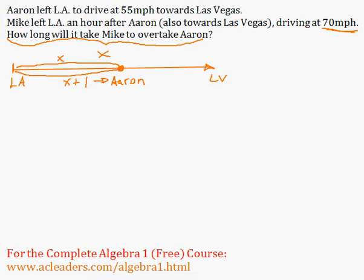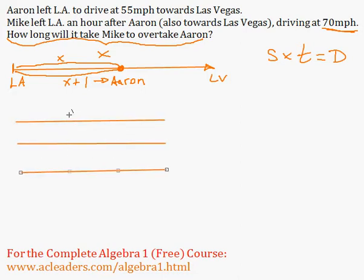So let me just quickly draw a diagram of speed times time and distance. Speed, time and distance for both Aaron and Mike. So let me just draw a grid here. Won't look too straight, but that's okay. So Aaron and Mike.